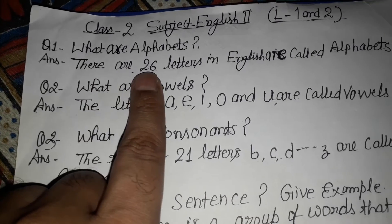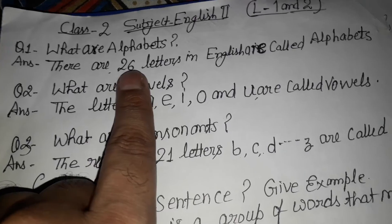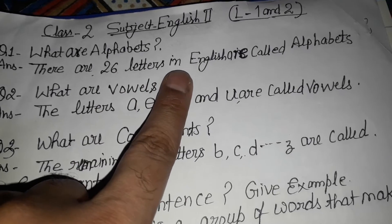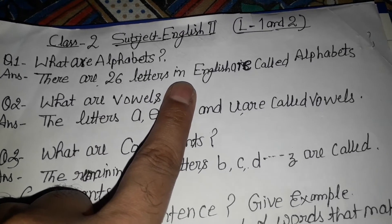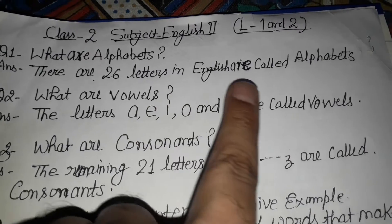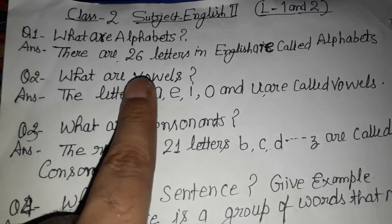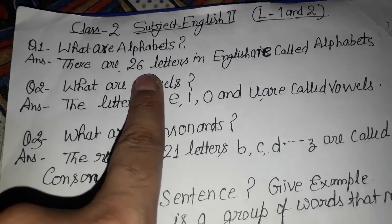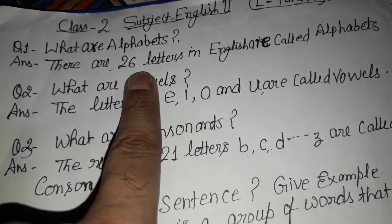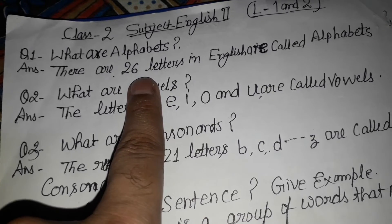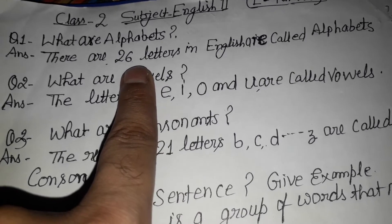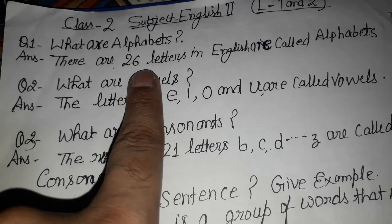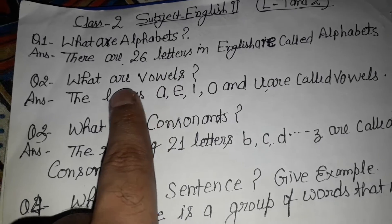There are 26 letters in English are called alphabets. In English we have 26 letters, A to Z. These are called alphabets.